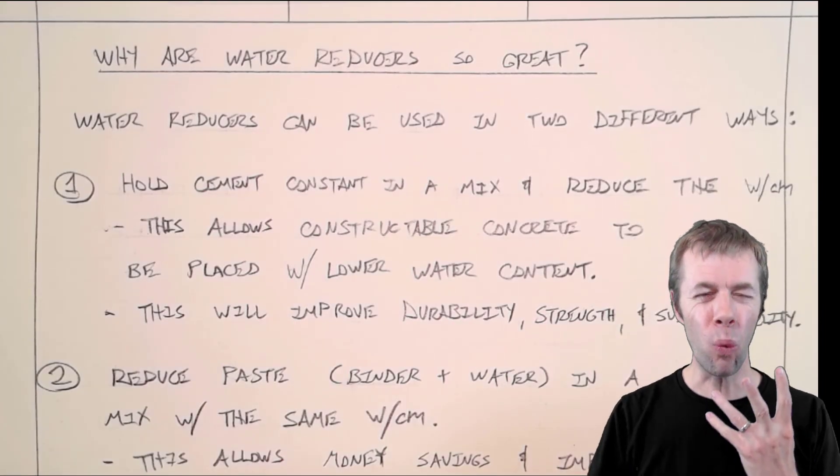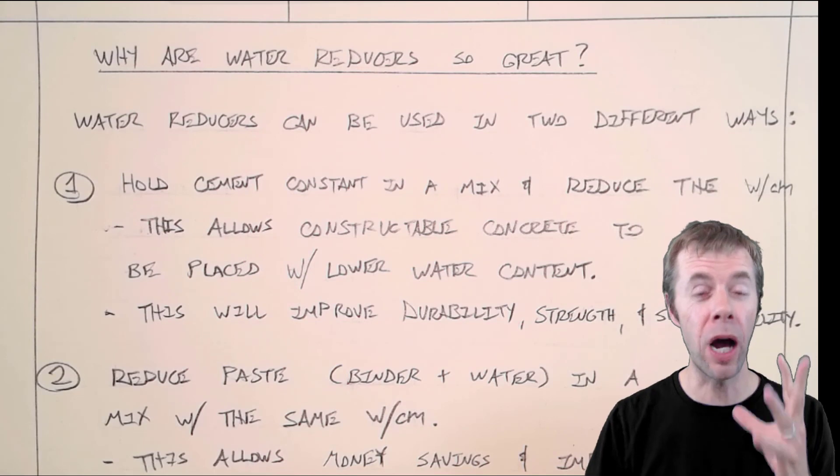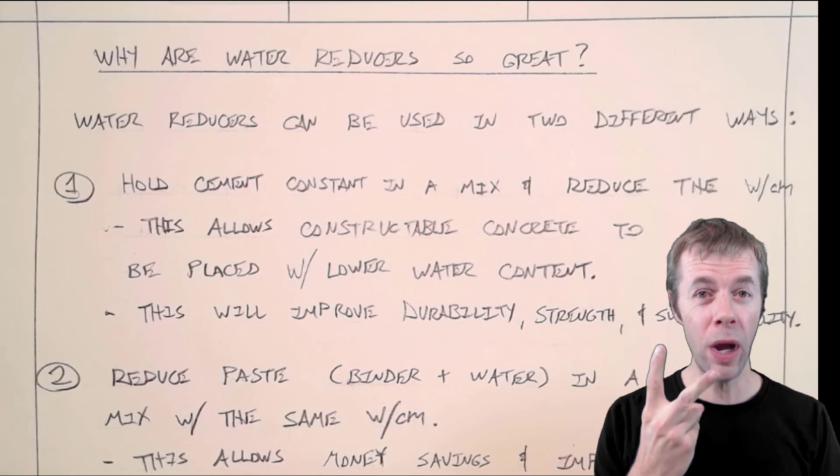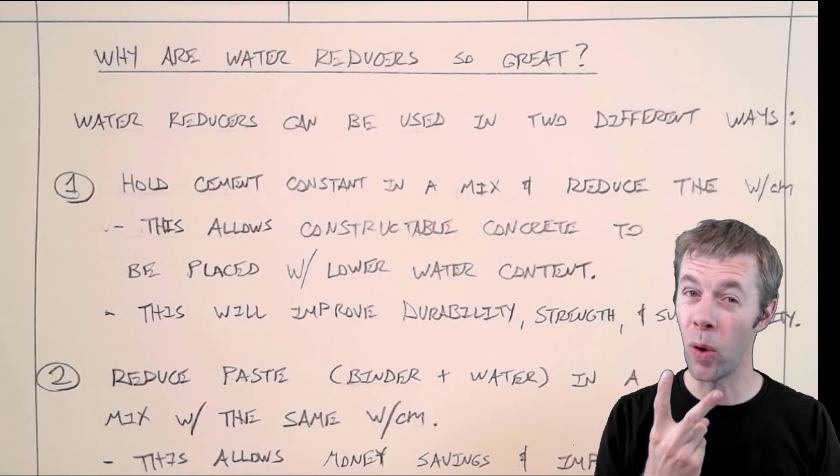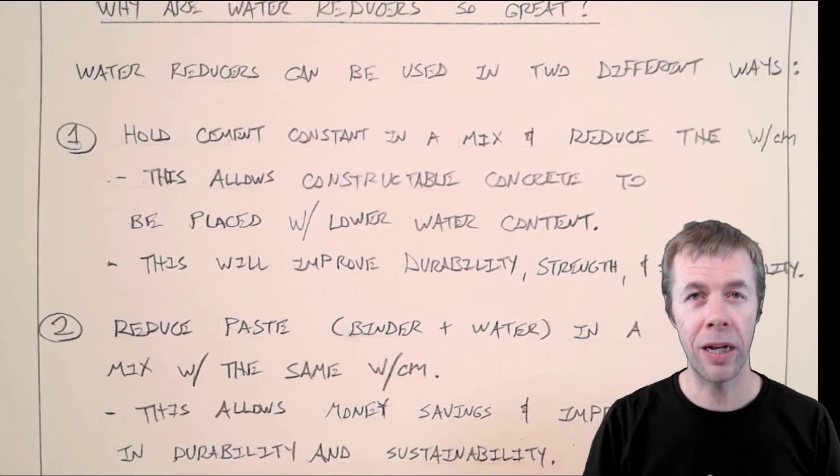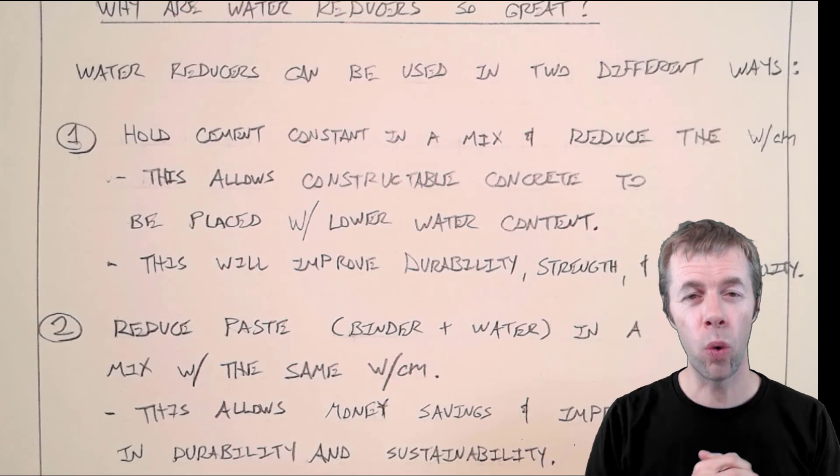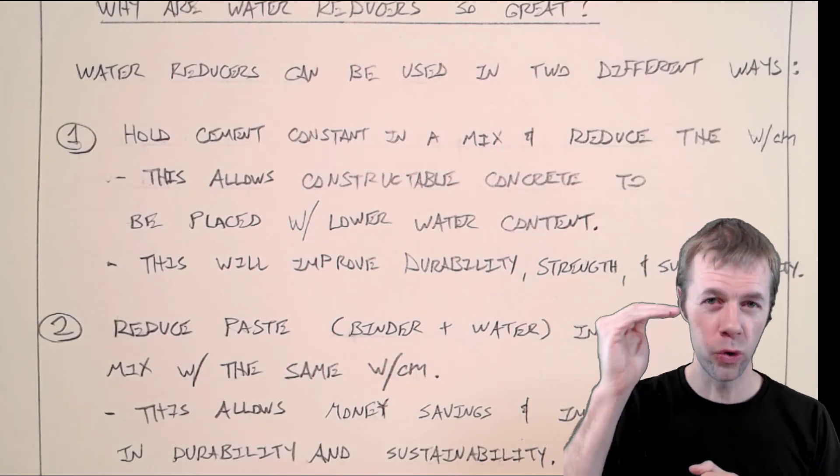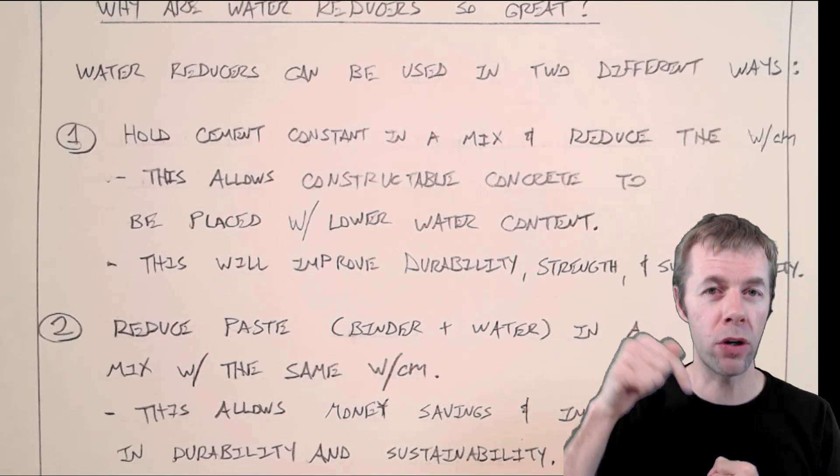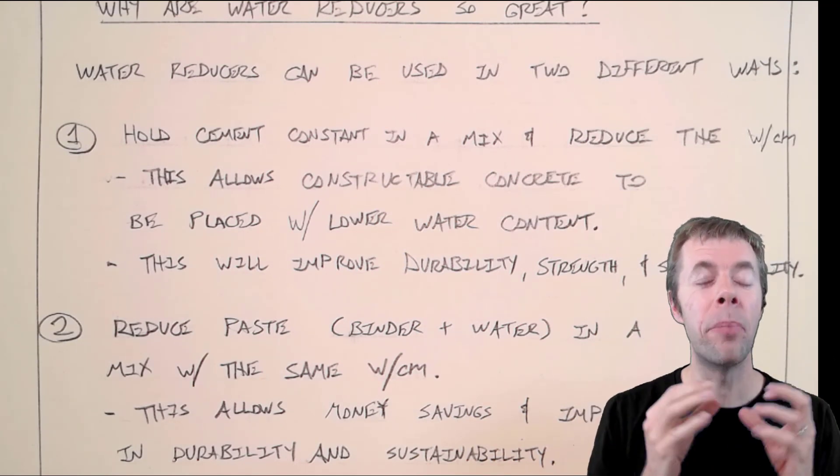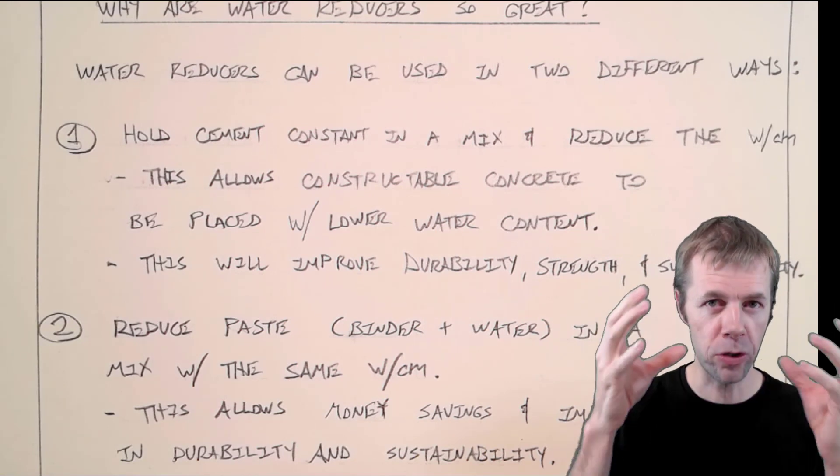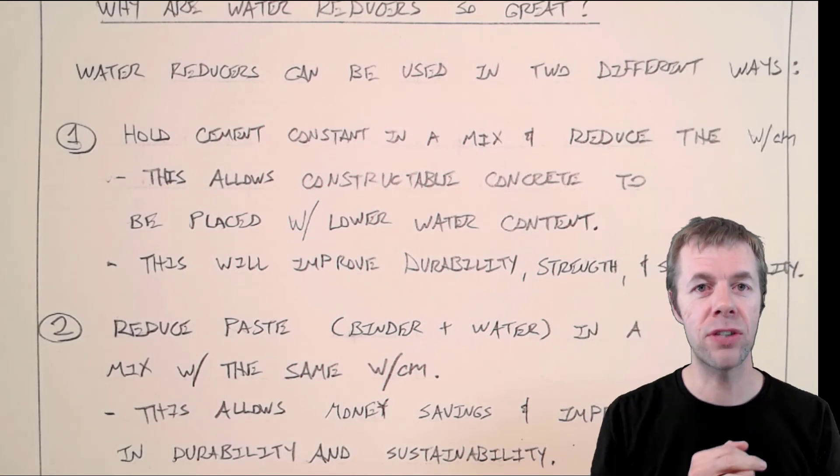I've been talking about water reducers, but why are they so great again? This is probably the most important thing I'm going to tell you this entire video. These are the two ways that you can use water reducers, and both are extremely valuable. Number one, you can use it to hold your cement constant in a mix and reduce your water to cement ratio. You're going to hold your cement constant and reduce your water content. That's going to reduce your water to cement ratio, and you can do all this by not getting a horrible slump.